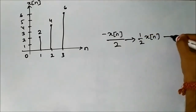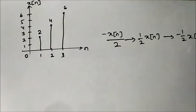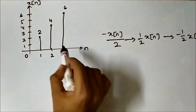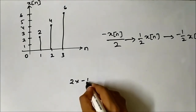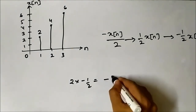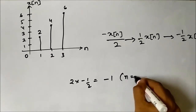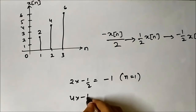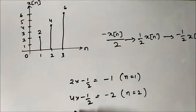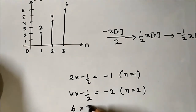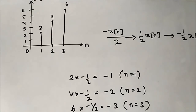We can do it in two steps — first (1/2)x[n], then -(1/2)x[n] — but since we already did that approach previously, here we'll do it directly. At each point n=1, 2, 3, we multiply the amplitude by -1/2. So 2 × (-1/2) = -1 at n=1. Then 4 × (-1/2) = -2 at n=2. And 6 × (-1/2) = -3 at n=3. These are the amplitudes we get.